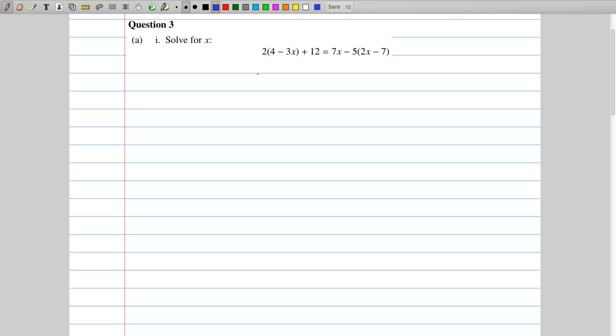In this question we're told to solve for x and we're given this equation. The first thing you always have to do in these types of questions is distribute, and so we end up with 2 multiplied by 4, then 2 gets multiplied by the minus 3x, so that is plus 2 by minus 3x, plus 12 is equal to 7x. This is a minus 5 times the 2, so minus 5 by 2x, and the minus 5 gets multiplied by the minus 7 as well, so we get minus 5 by minus 7.